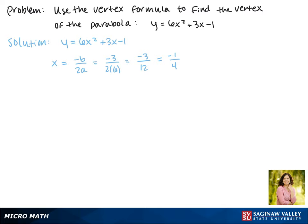Now to find the y value of our vertex we need to plug negative 1 fourth back into our equation. We get 6 times negative 1 fourth squared plus 3 times negative 1 fourth minus 1.